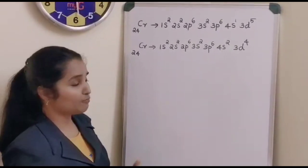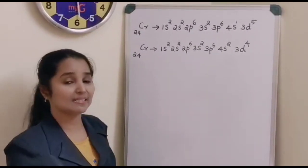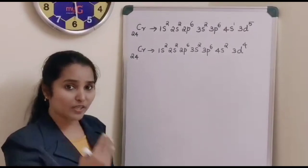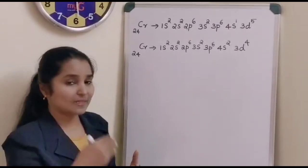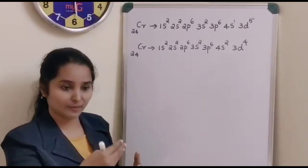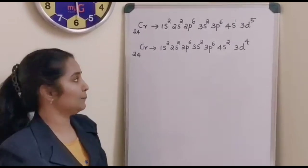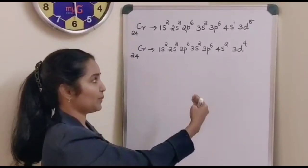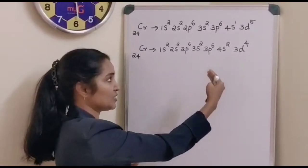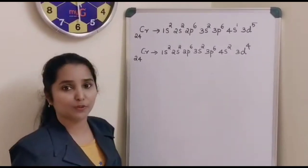That is, according to the Aufbau principle, according to the increasing order of energies, electrons should be filled in the orbitals. So: 1s2, 2s2, 2p6, 3s2, 3p6, 4s2 and 3d4.